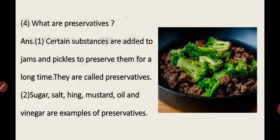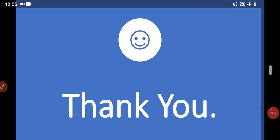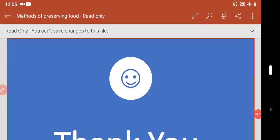Question 4: What are preservatives? Certain substances are added to jams and pickles to preserve them for a long time. They are called preservatives. Sugar, salt, hing, mustard, oil, and vinegar are examples of preservatives. That completes this exercise. Please like, subscribe, and share with your friends. Thank you.